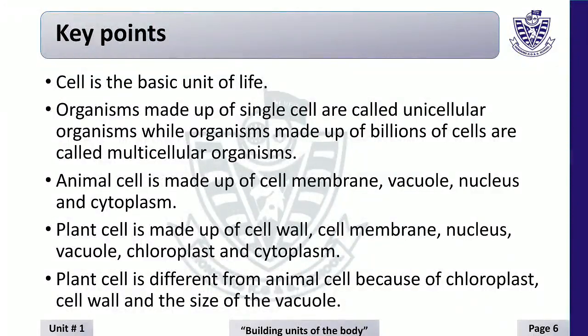Key points: Cell is the basic unit of life. Organisms made up of single cells are called unicellular organisms, while organisms made up of billions of cells are called multicellular organisms. Animal cell is made up of cell membrane, vacuole, nucleus, and cytoplasm. Plant cell is made up of cell wall, cell membrane, nucleus, vacuole, chloroplast, and cytoplasm. Plant cell is different from animal cell because of chloroplast, cell wall, and the size of the vacuole.